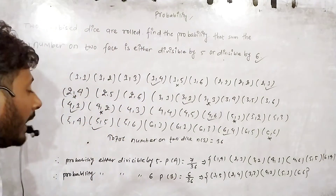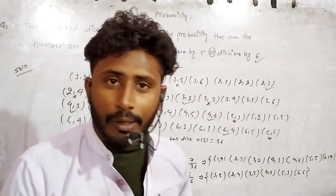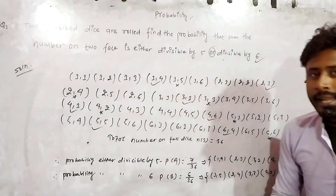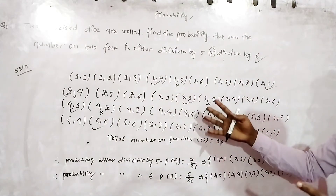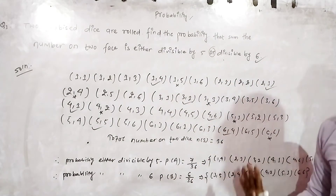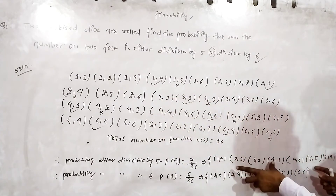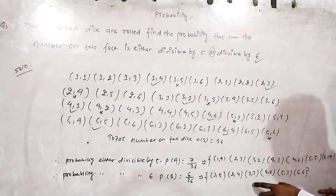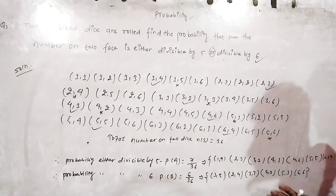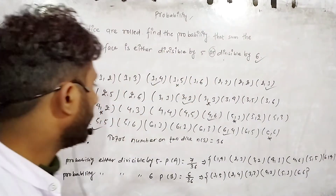Now we check the intersection of A and B — outcomes where the sum is divisible by both 5 and 6. There is no common outcome, so the intersection is 0. There is no difference; the intersection part is zero.